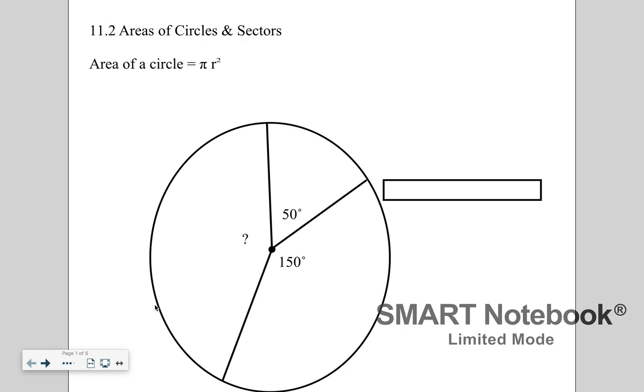All right, these are the notes for section 11-2, areas of circles and sectors. The area of a circle is pi r squared. We're actually going to see where that came from on Monday. We're going to do an exploration and see where that formula came from.